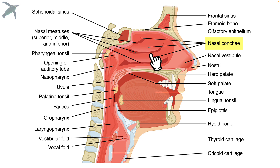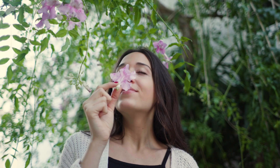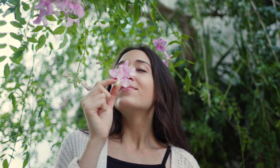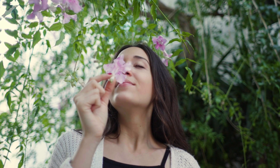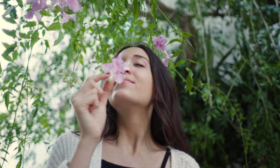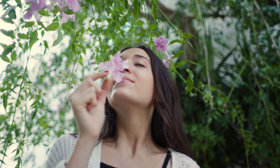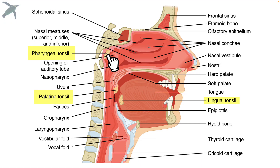The turbinates act to increase the surface area of mucosal epithelia. The goal is to warm, humidify, and smell the air, as well as to trap any particles that we may have inhaled. We also find three sets of tonsils here, and this will be our first line of defense against any pathogens.